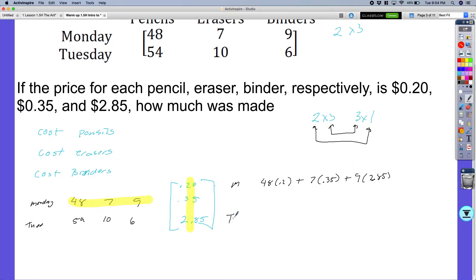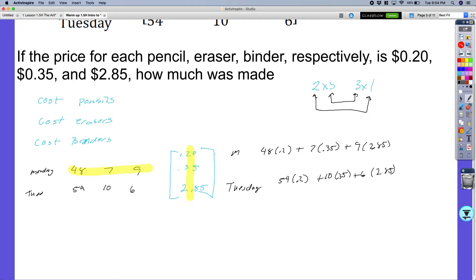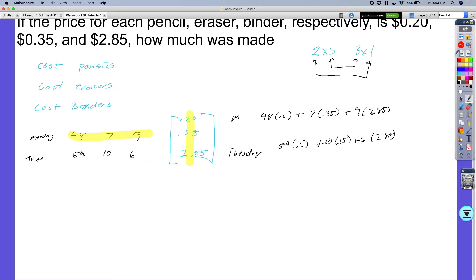And then so for Tuesday, I'm going to have 54, same prices, 20 cents plus 10 times 0.35, and then plus 6 times $2.85. So when I do all this then, I should have had values.